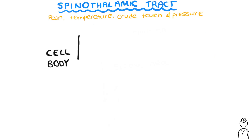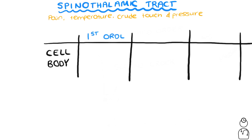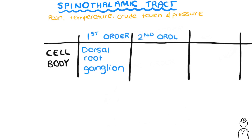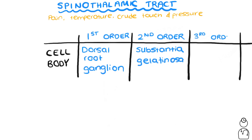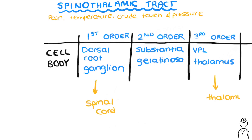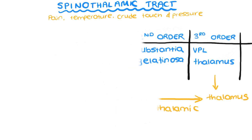To summarise the cell bodies for the spinothalamic tract: first-order neuron cell bodies are in the dorsal root ganglion; second-order neuron cell bodies in this tract are found in the substantia gelatinosa of the spinal cord; and third-order neuron cell bodies are again found in the VPL of the thalamus. We can see that the information is going from the spinal cord to the thalamus, hence the name spinothalamic.